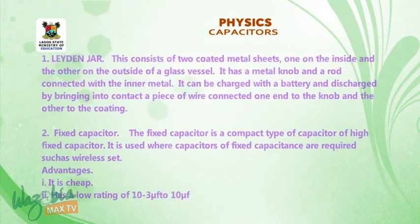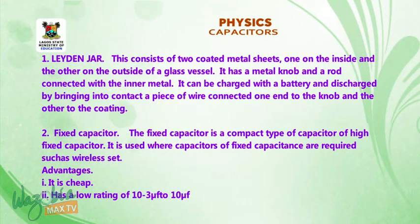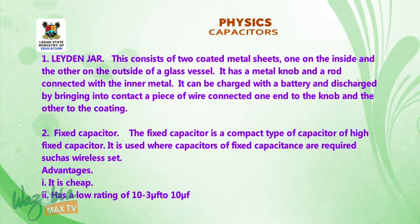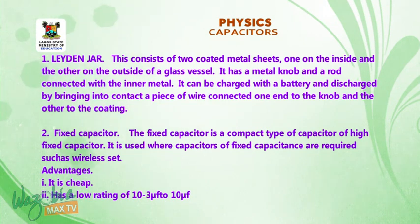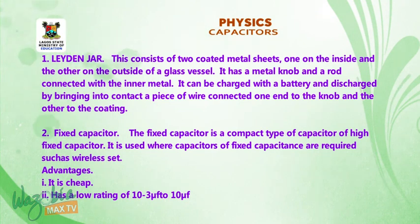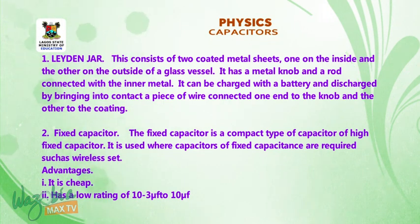1. Leyden jar capacitor. This consists of two coated metal sheets, one on the inside and the other on the outside of a glass vessel. It has a metal knob and a rod connected with the inner metal. It can be charged with a battery and discharged by bringing into contact a piece of wire connected one end to the knob and the other to the coating.